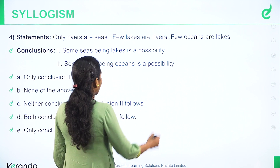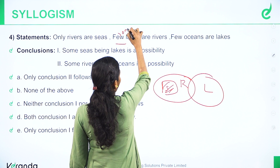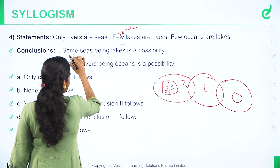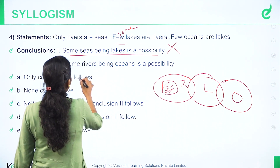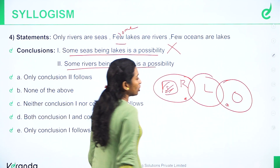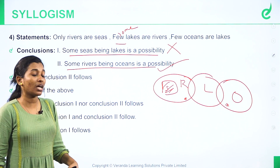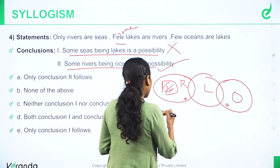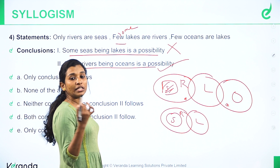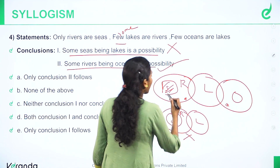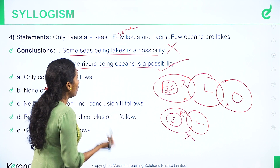Fourth question: Only rivers are seas, meaning all seas are rivers. Few lakes are rivers. Few oceans are lakes. Some seas are lakes is a possibility. Some rivers being ocean is a possibility — but that needs to be checked carefully. This is a negative relation, so if you take a small Venn diagram, you find that few seas and few lakes overlap. The second conclusion follows, and the first is also a possibility. If you follow the third, you find a vast area of seas.